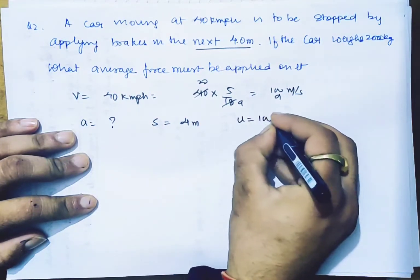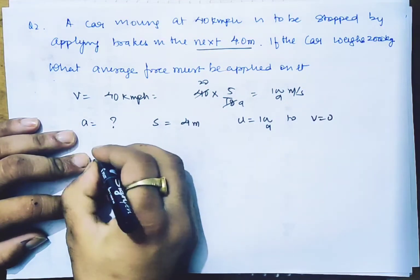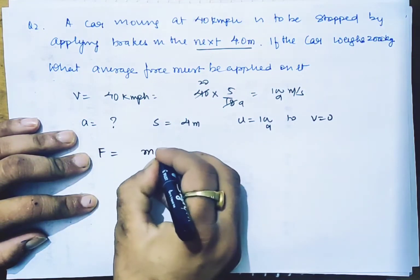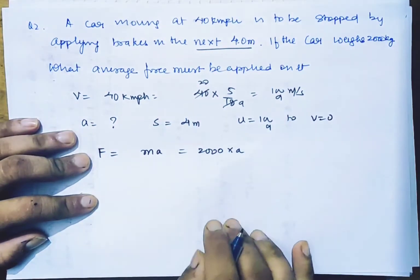So the speed is 100 by 9 to 0 is reached, the final speed. So if we find this force, then we will put the resistive force F equals ma. We already have a mass of 2000 kg. Now we have to find this force.